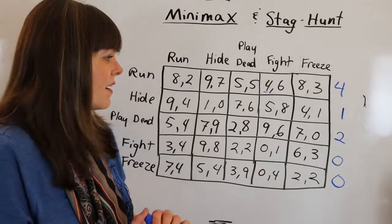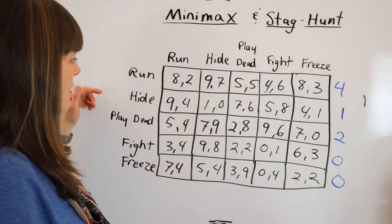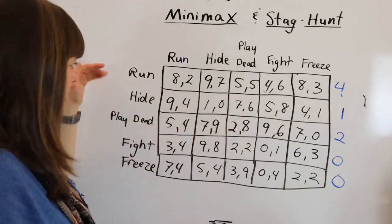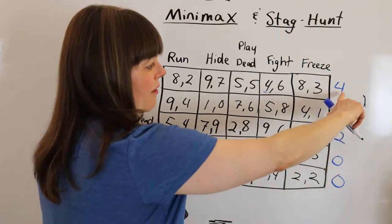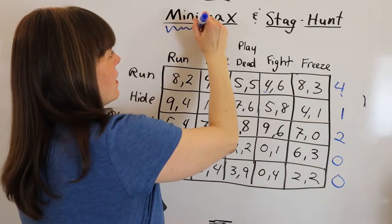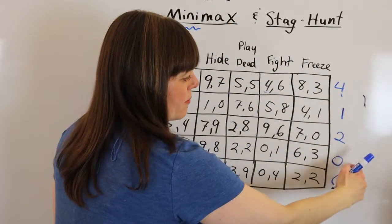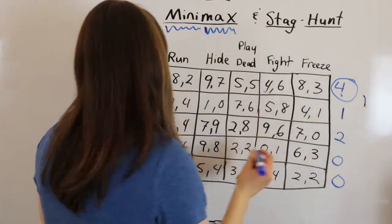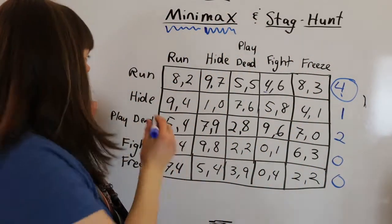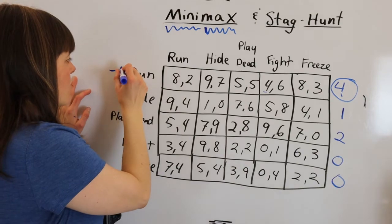So for player 1, we see that the worst possible thing that could happen under each possible strategy is listed over here. And we see of these minimums, the maximum of the minimums, so the second part is max, is the 4. So their minimax choice is going to be to run.